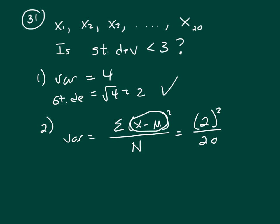But how many numbers do I have? I've got 20 numbers, right? So that would give me, you need to multiply that by 20. So that would be 80 over 20, which is 4.